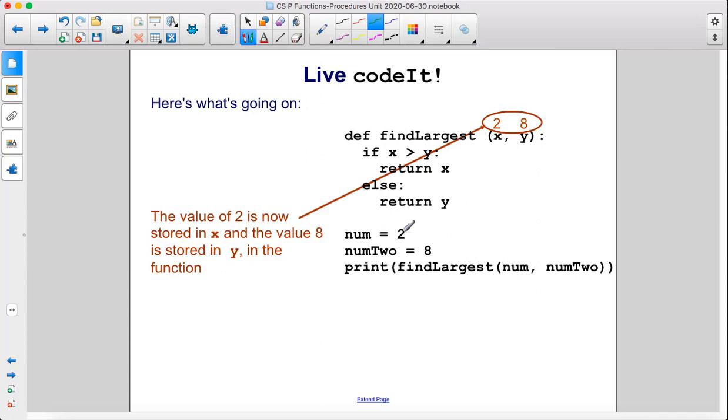Since we set num equal to 2 and num2 equal to 8, and then we have num and num2 here. So this num has a value of 2, this num2 has a value of 8. Those values are sent here to the corresponding x and y parameters.